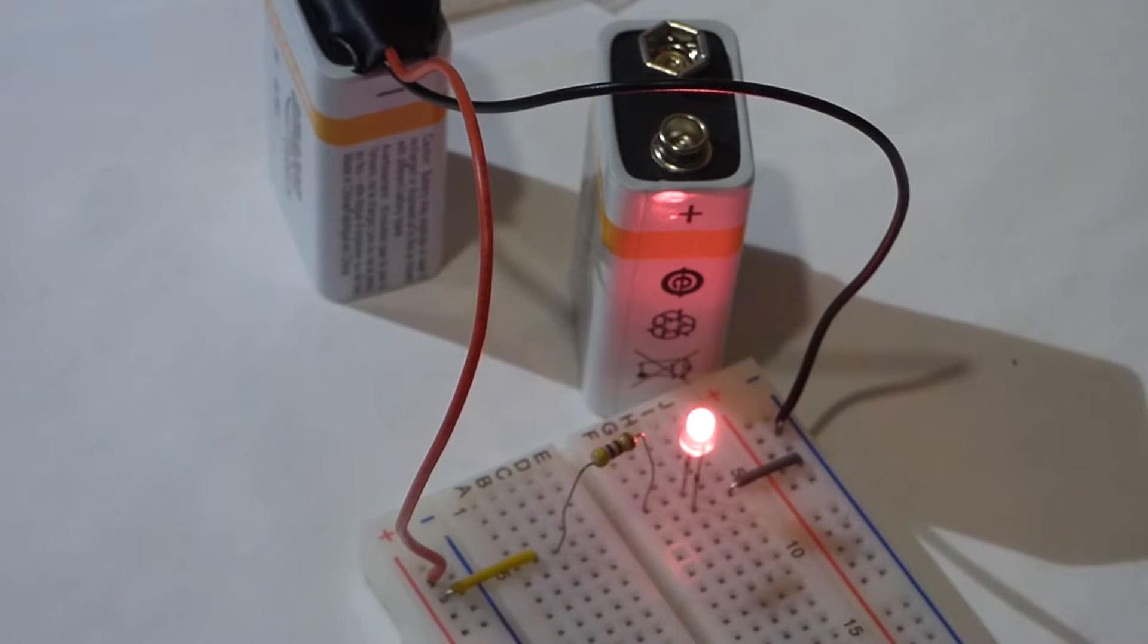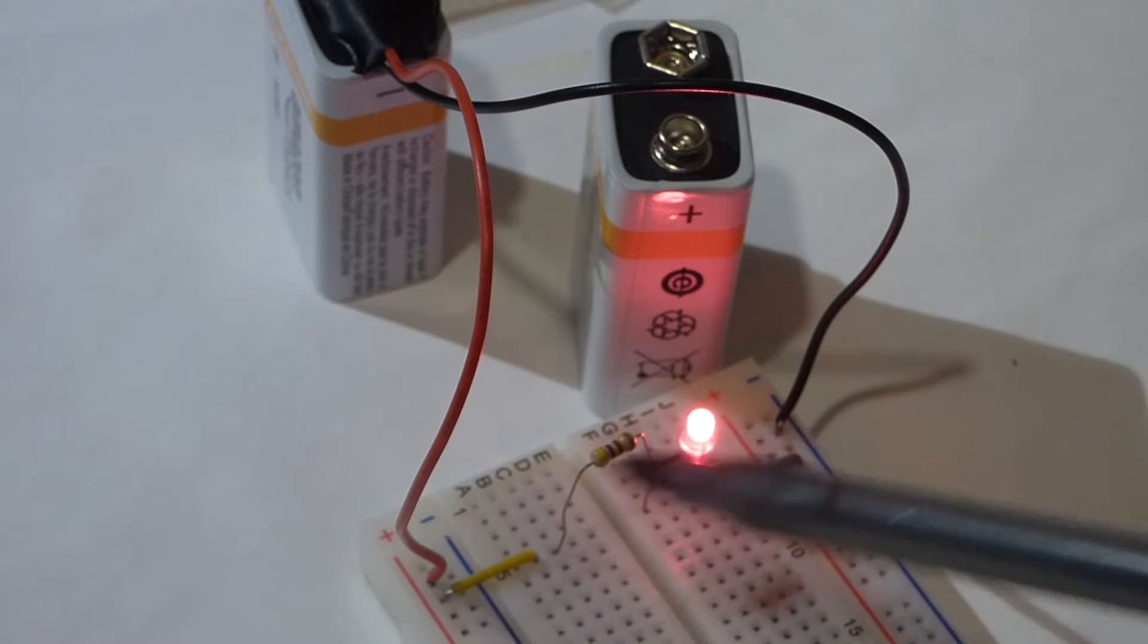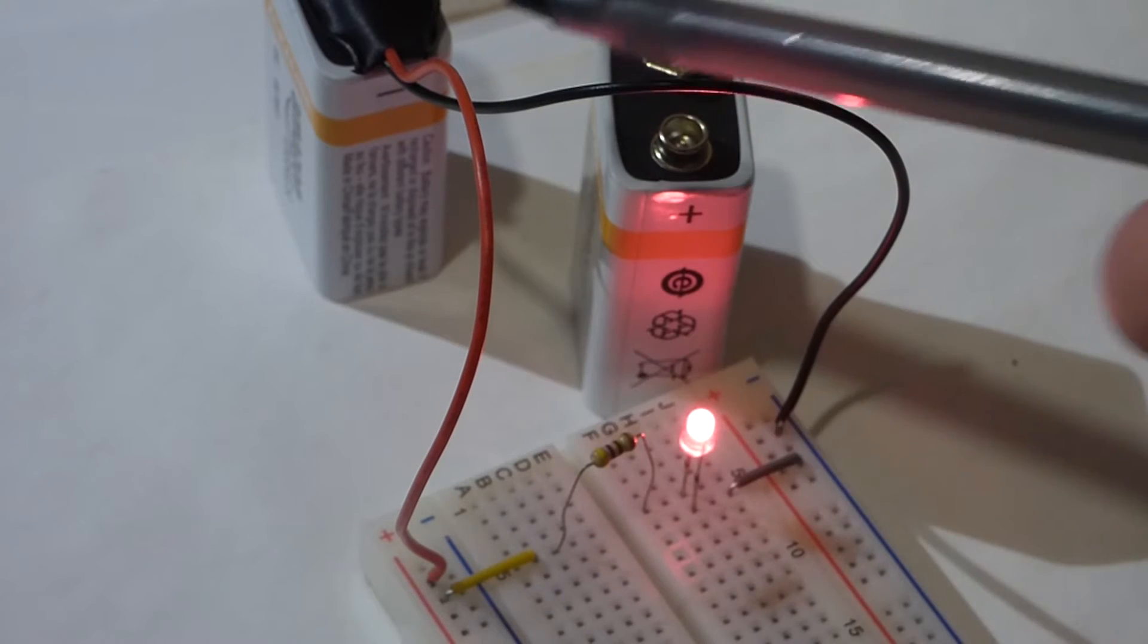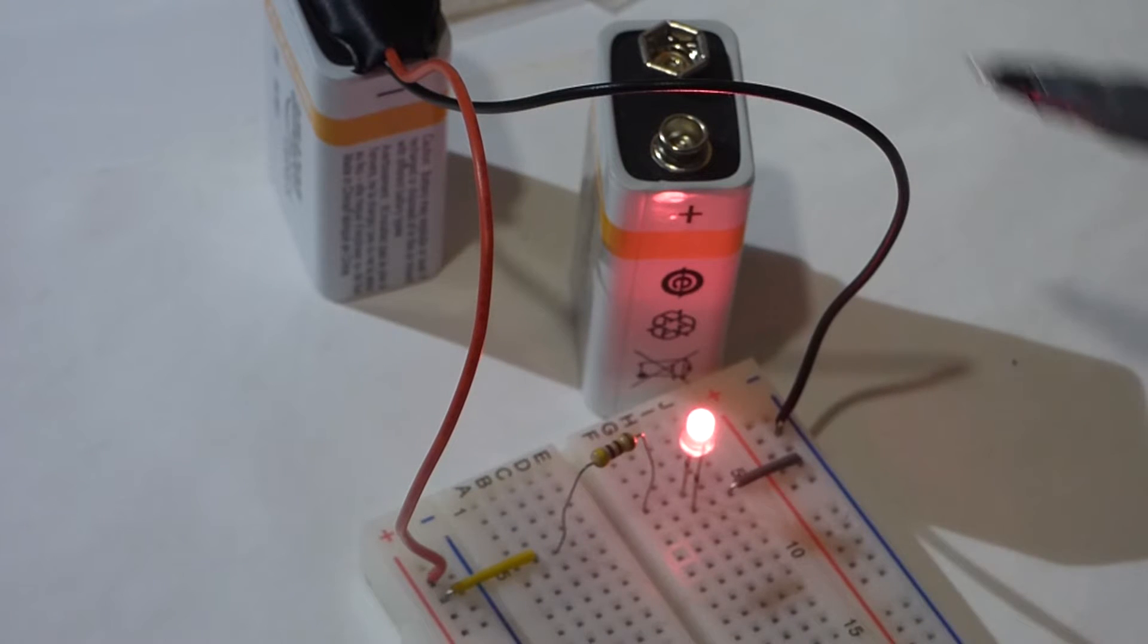In the last video I talked about circuits, how we have to connect these components one side to one side of the battery and then the other side to the other side of the battery to make a complete circuit. Now for this video I'm going to talk about one of the ways we connect them.